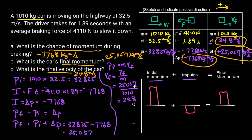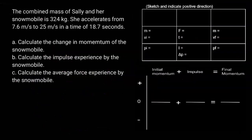By filling out this chart, you're going to be able to answer all the questions you need. Let's take a look at another question. The combined mass of Sally and her snowmobile is 324 kilograms.